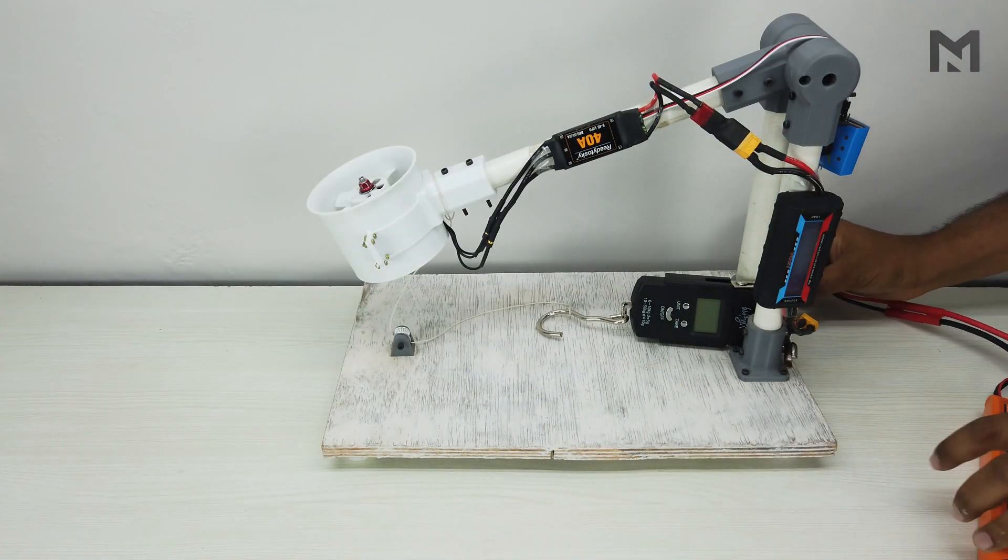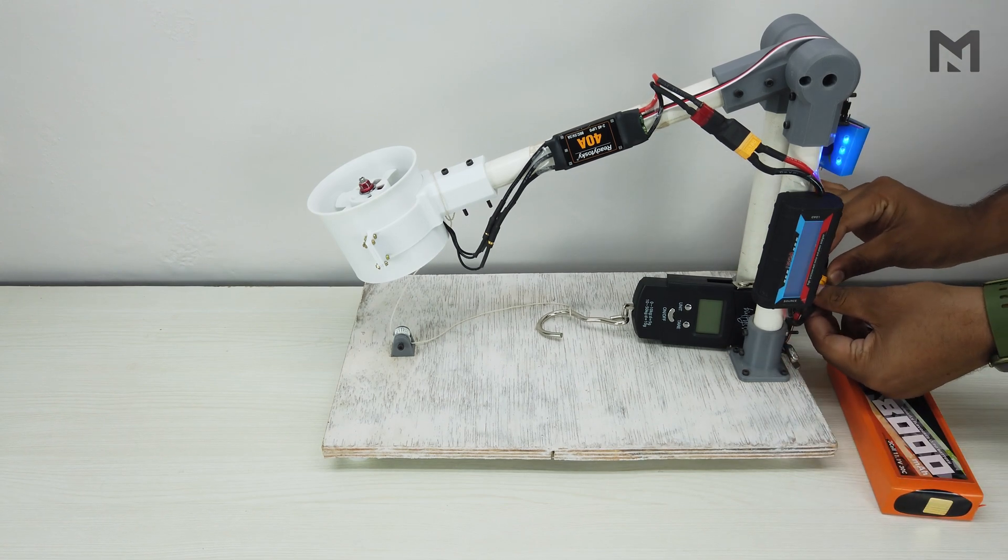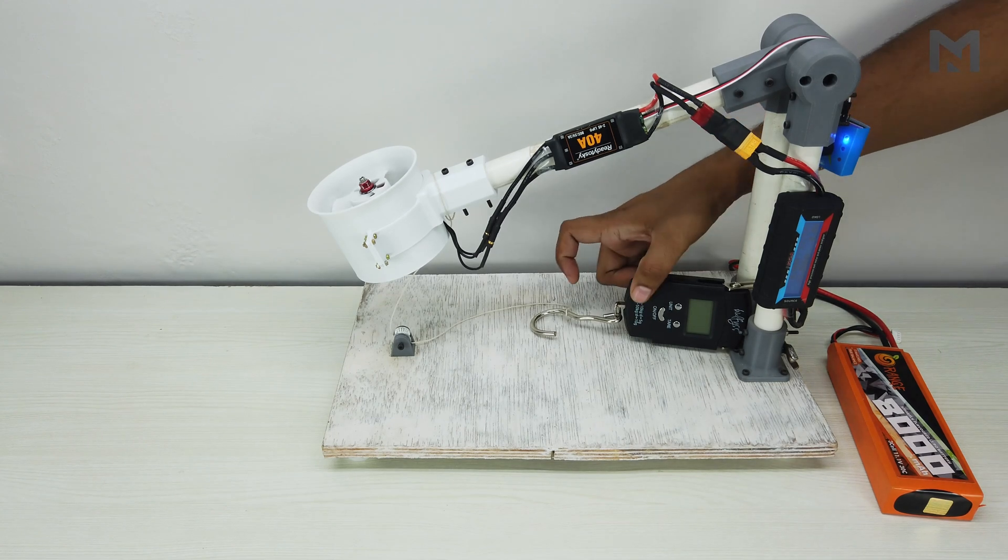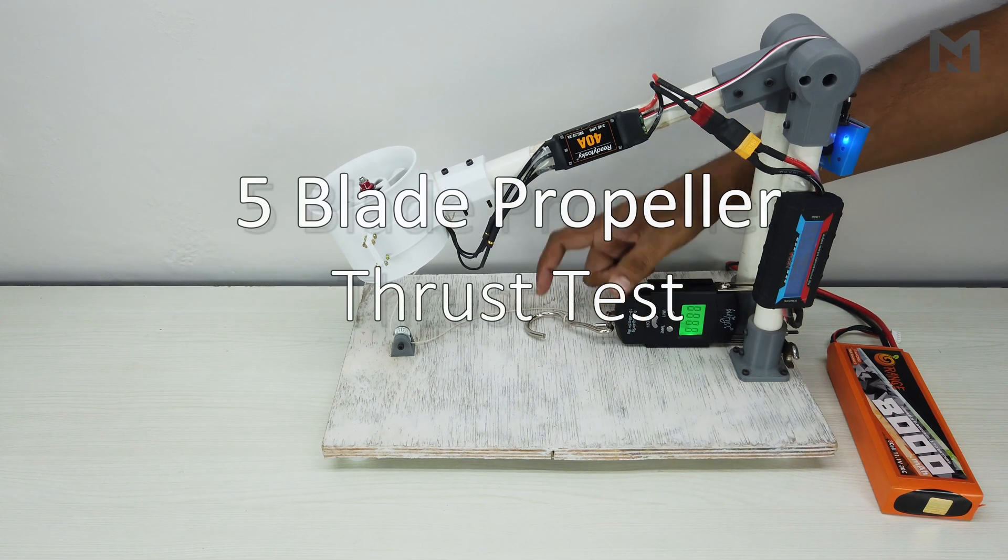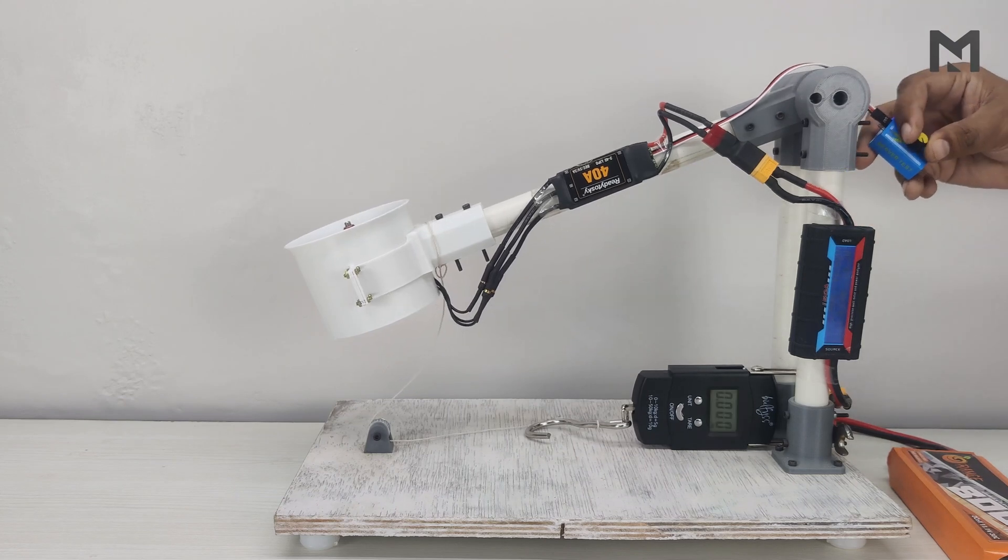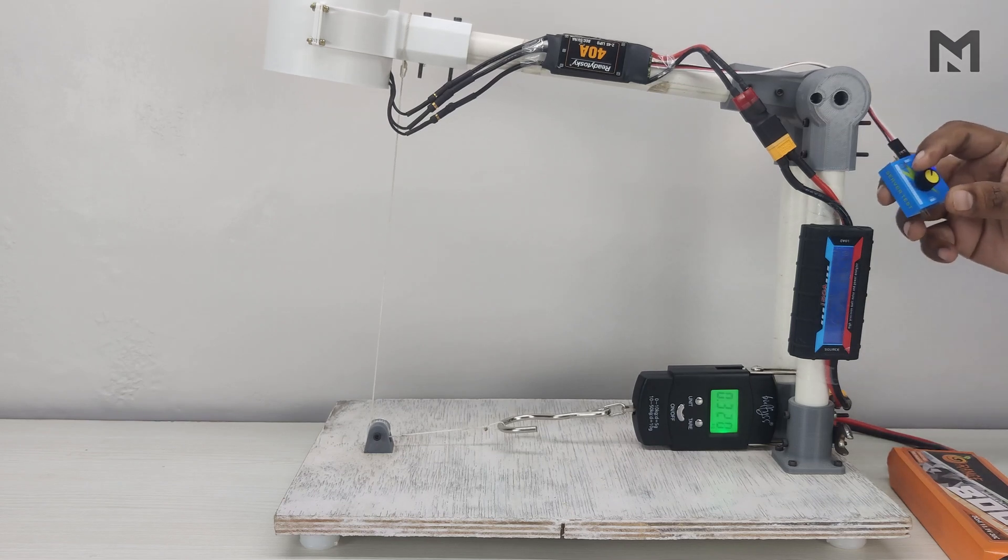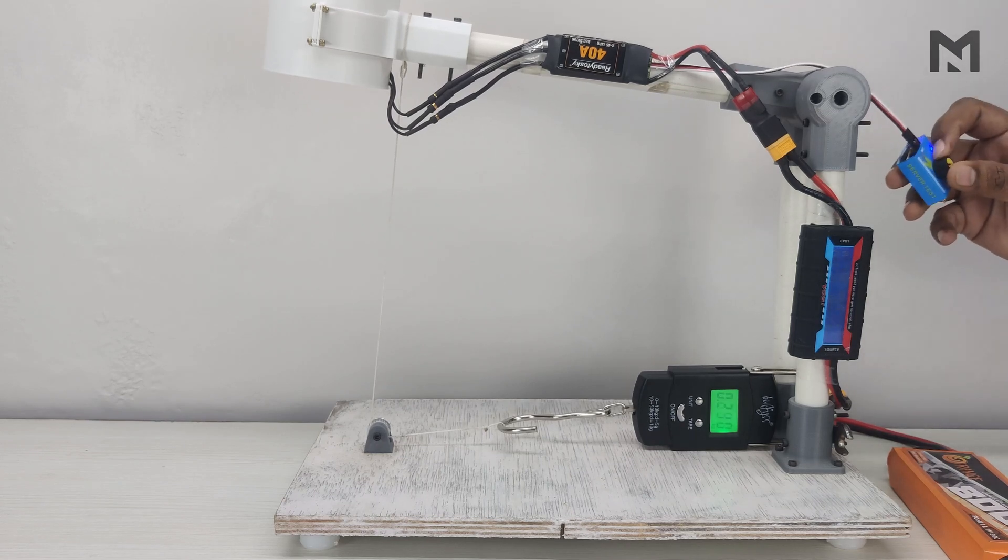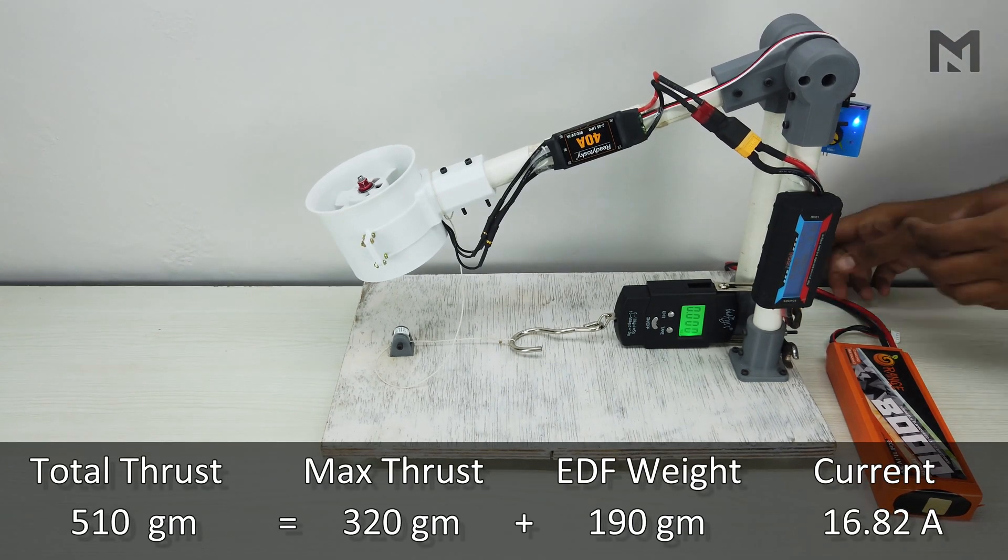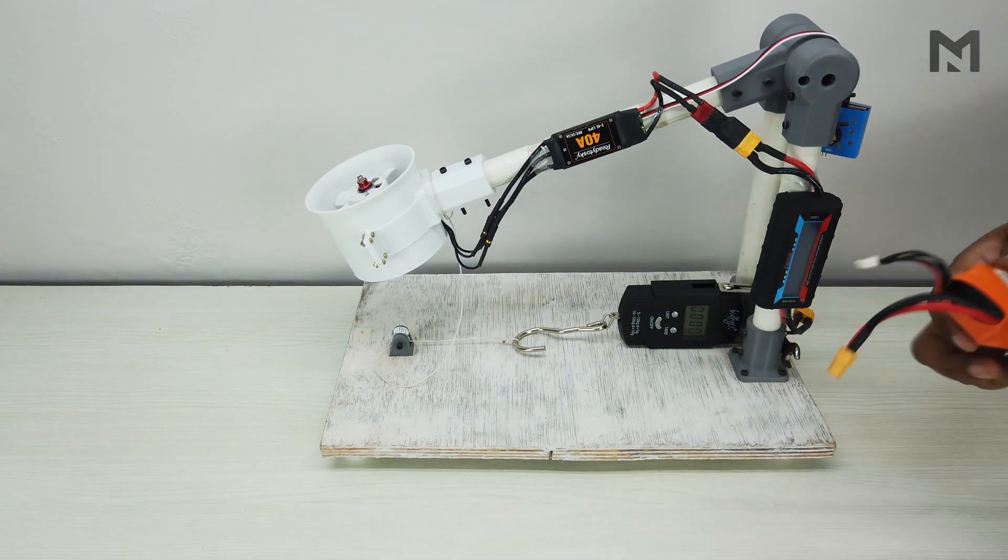Now connect the battery and start the test. I am using this 8000 mAh battery so I don't need to recharge it again and again after the test. At 16.82 Amperes, we get a total thrust of 510 grams. Now I will change the battery and calculate the thrust.